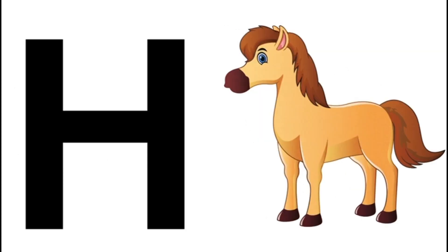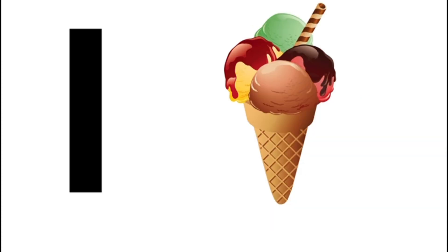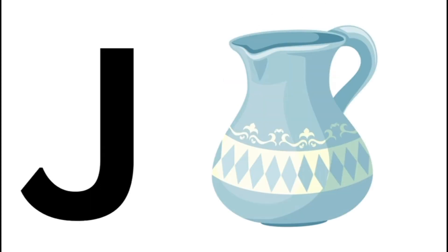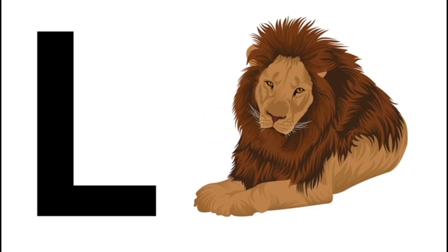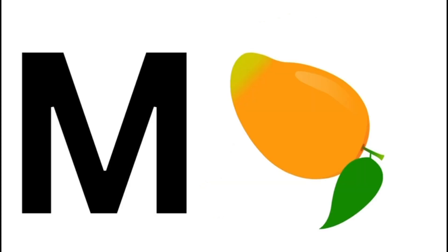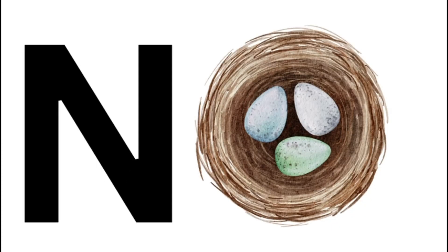H for horse, I for ice cream, J for jerk, K for kite, L for line, M for mango, N for nest.